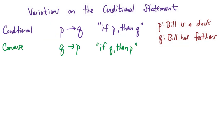So if our original conditional statement is if Bill is a duck then Bill has feathers then the converse of that statement would be if Bill has feathers then Bill is a duck. Now the conditional logic does make sense to me but the converse doesn't. Just because Bill has feathers doesn't mean that Bill is a duck.